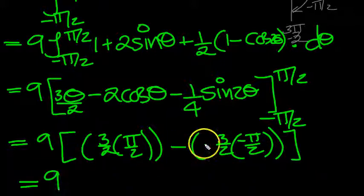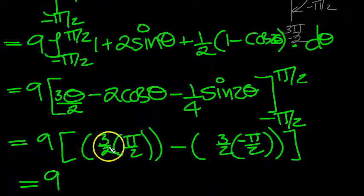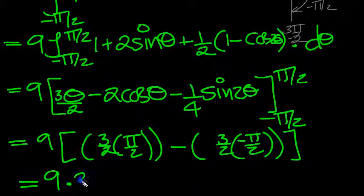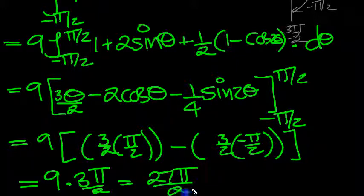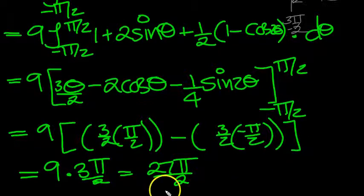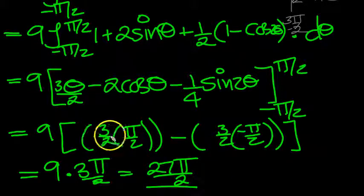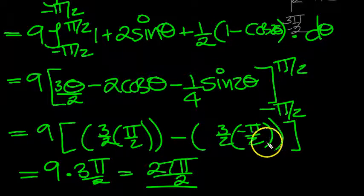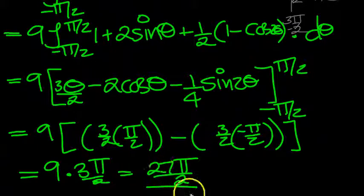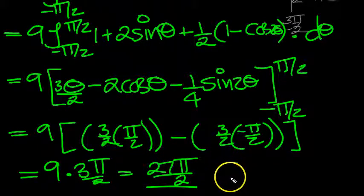So we've got 9. Double minus makes a plus, so the half and the half, it will just be 3 pi over 2. 27 pi over 2 is what the answer is there. Let's just tidy that up. 27 pi over 2. Just double check that then. This was 3 pi over 4, and this is another 3 pi over 4, so it will be 3 pi over 2 when you add them. And then 9 through to 27. 27 pi over 2, units squared.